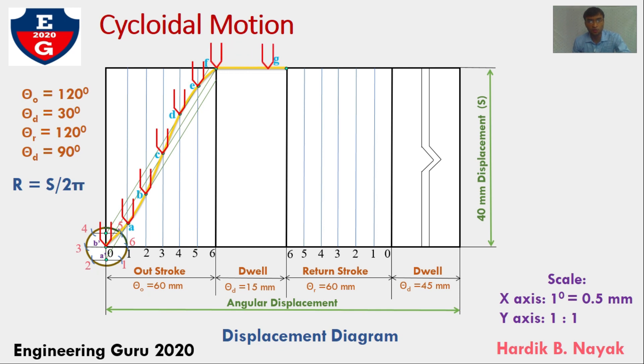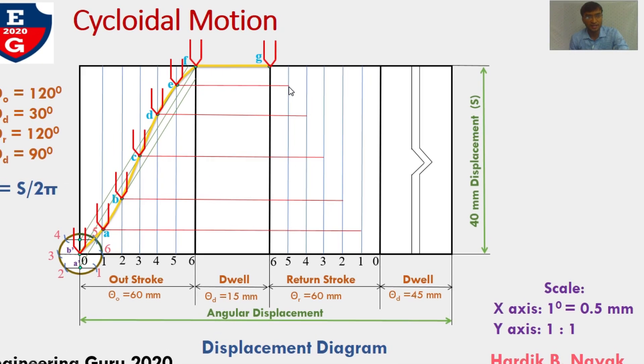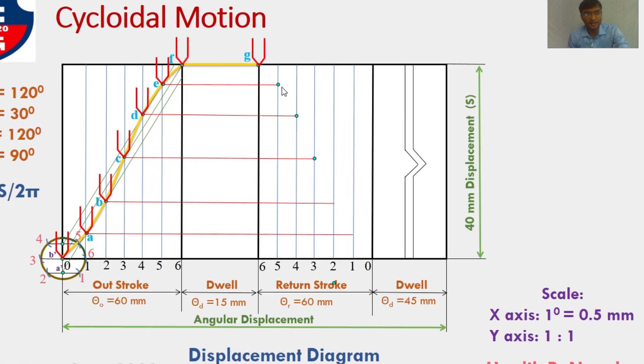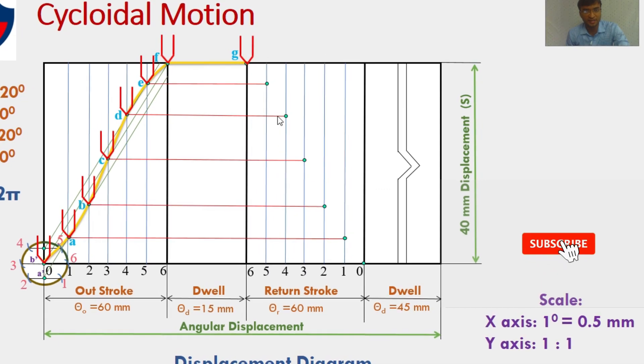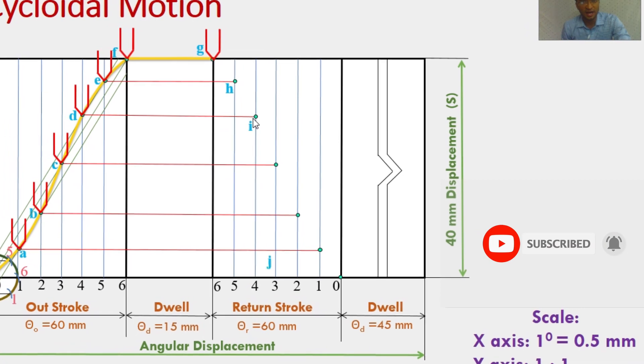During dwell, follower remain same height, so draw horizontal line which indicate dwell. Now onto return stroke, using cycloidal motion to follow similar technique.